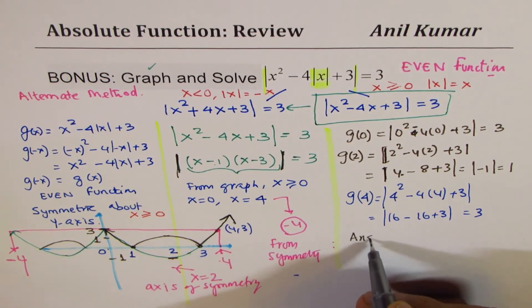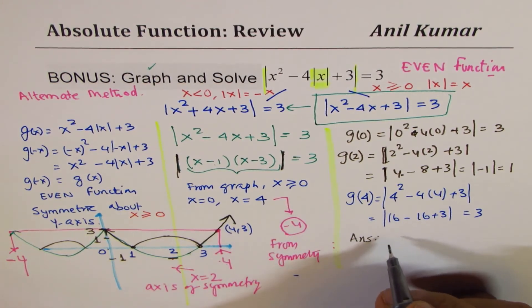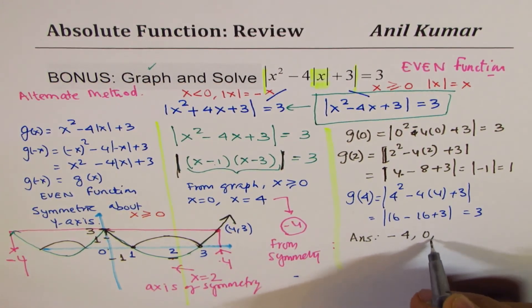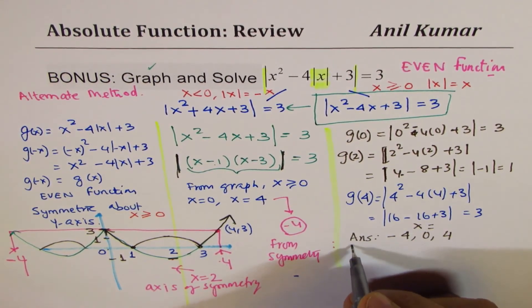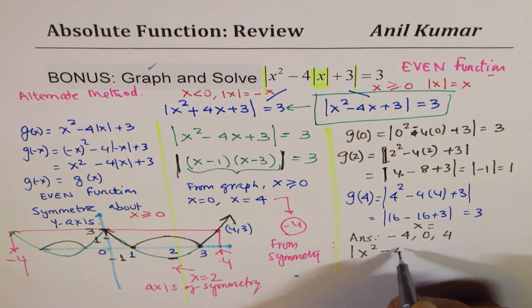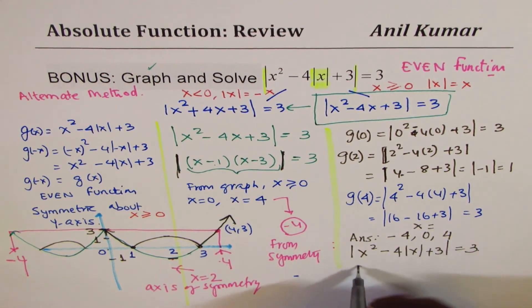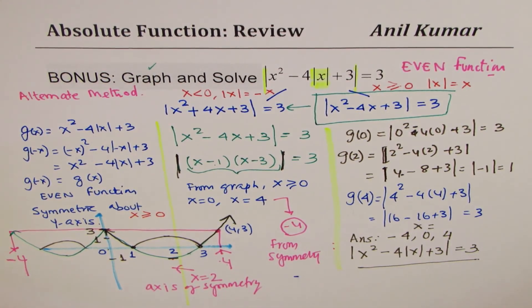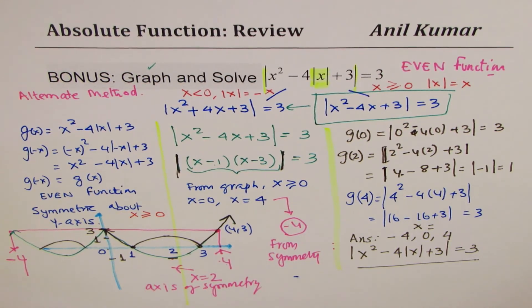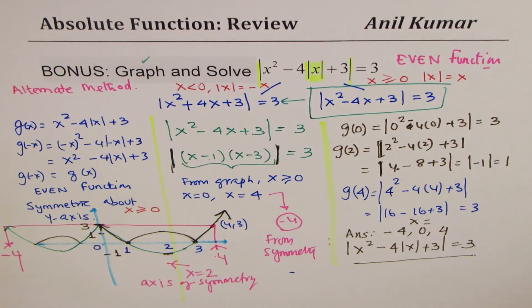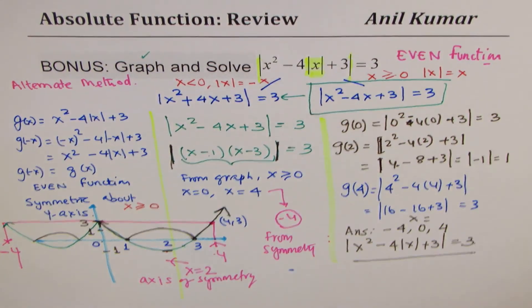So, now I write down my solution. So, answer for this question is, minus 4, 0, and 4. These are the values of x, which will satisfy the equation, absolute value of x squared minus 4 absolute x plus 3 is definitely equal to 3. Do you see that? And that is how I'll provide the solution. I hope you find it interesting. We use different methods to solve different questions. Feel free to make suggestions, write your comments, and if you like and subscribe, that would be great for me. Thank you for your time. I appreciate it.